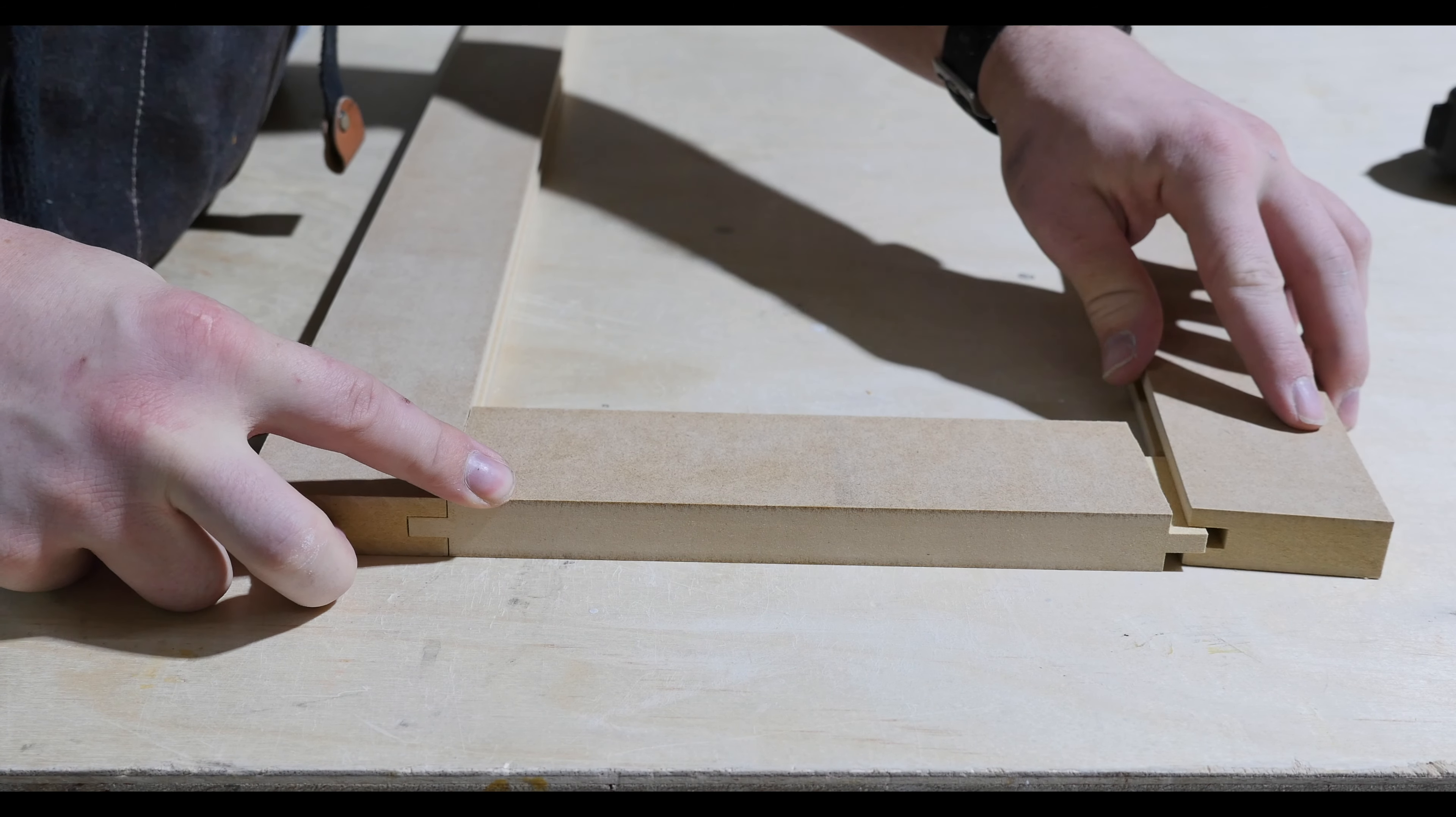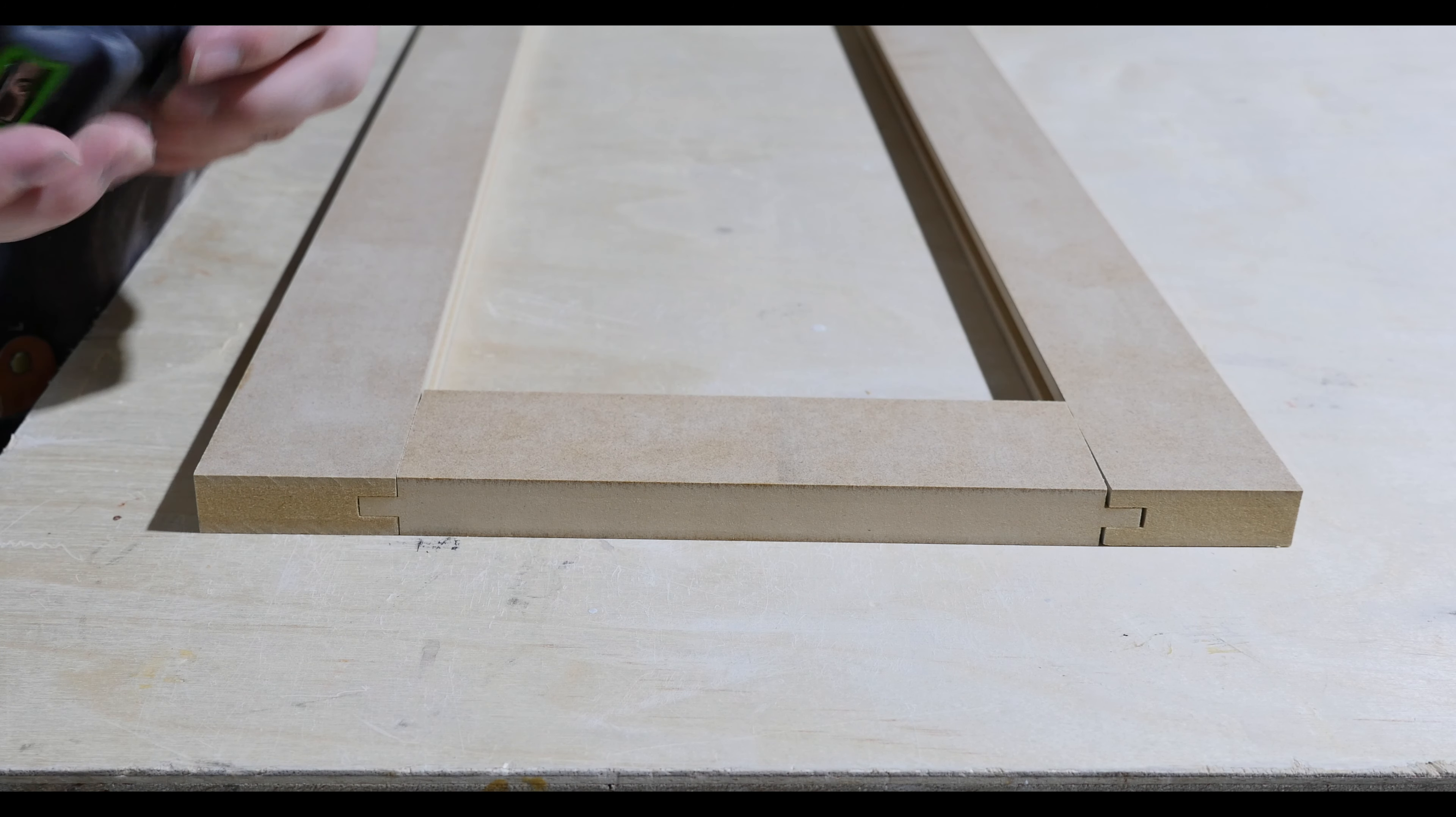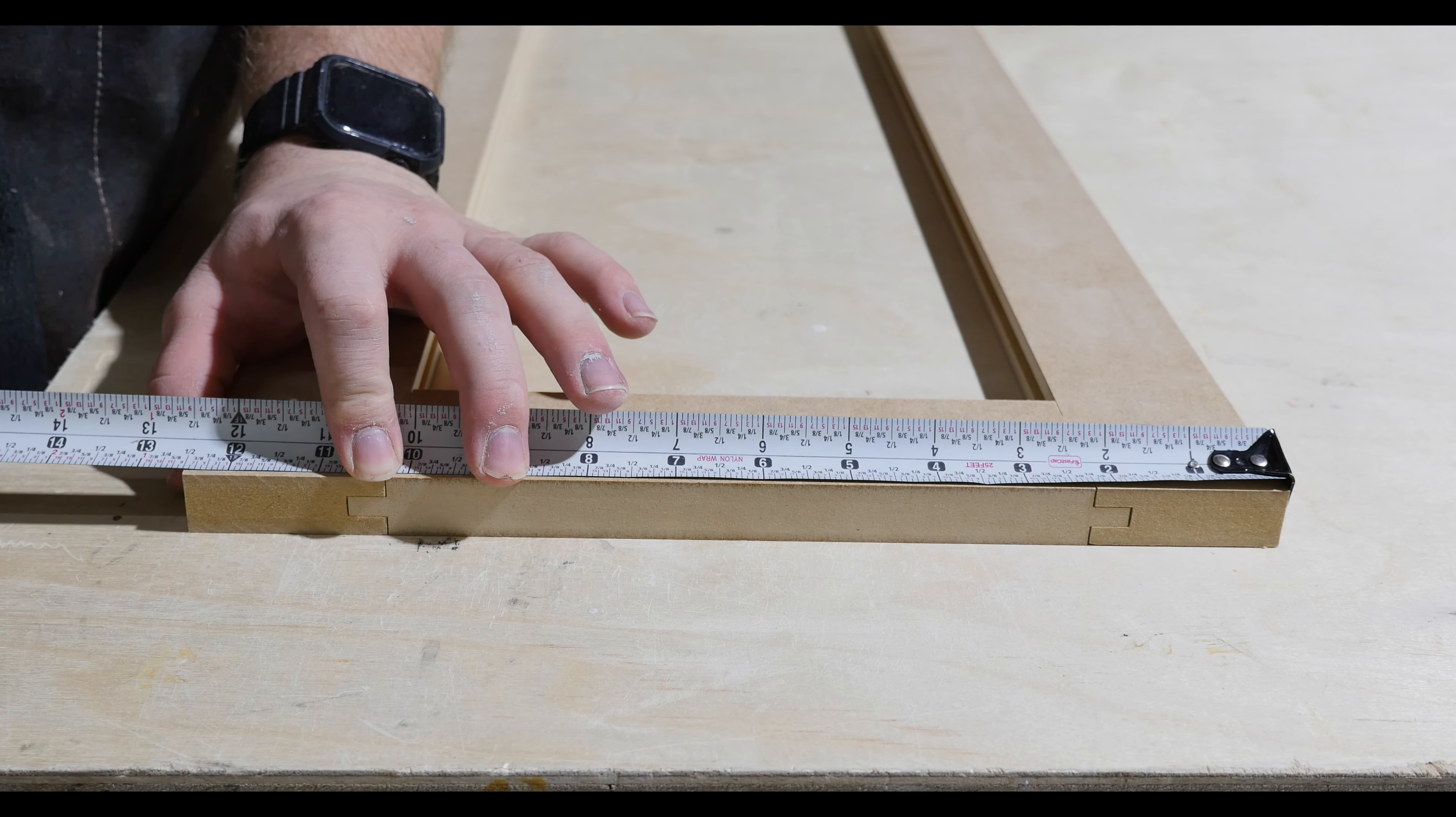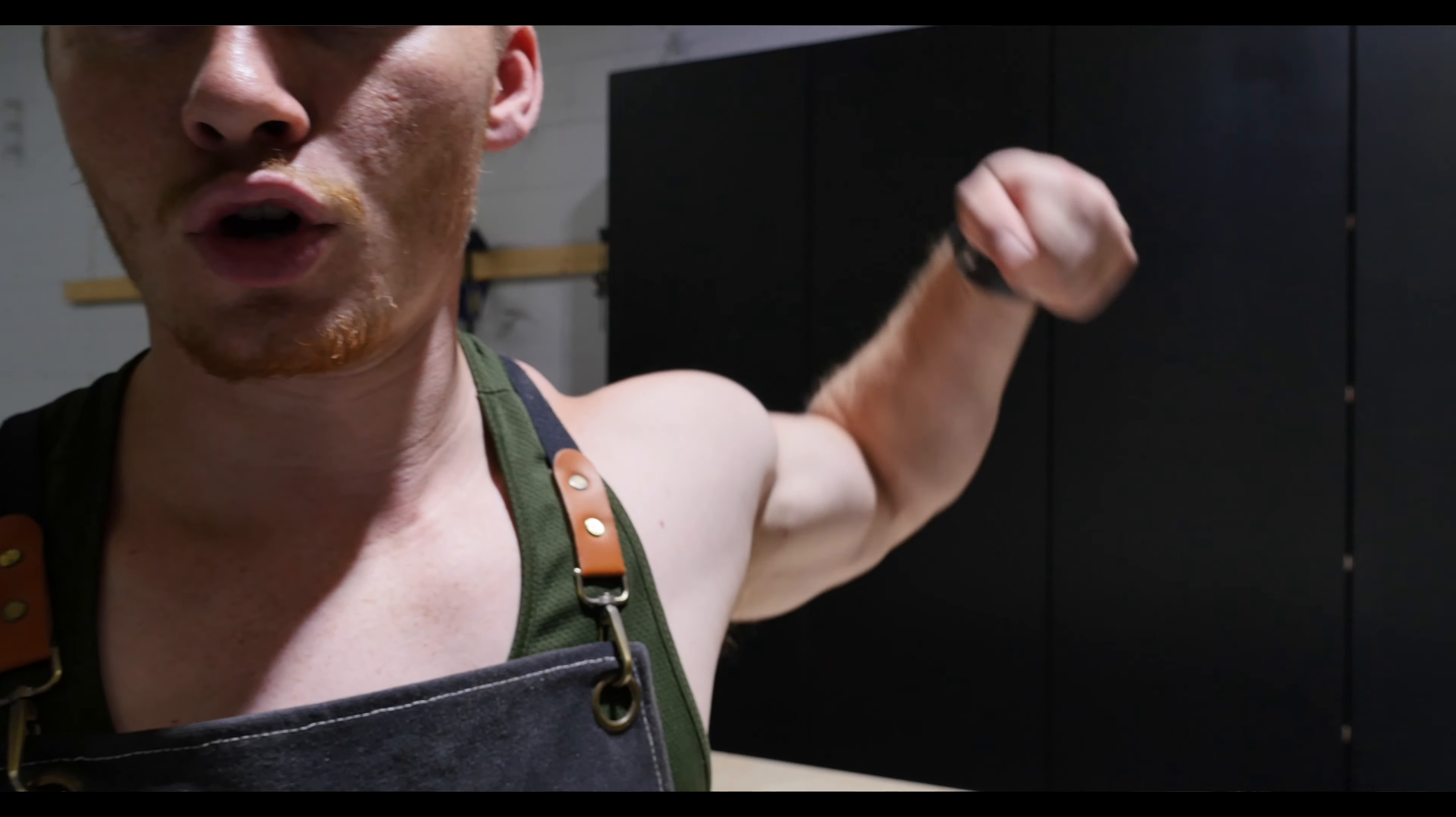Sometimes what I like to do before cutting out the panel is to dry fit the rails and styles and then pull our outside to outside measurement to confirm that the door is the proper dimensions. Hey, would you look at that exactly 12 and a half. Now we can go over to the table saw and cut our floating panel.